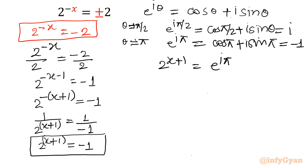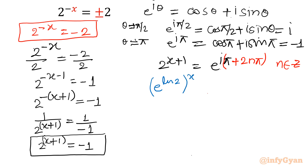To generalize, I replace pi by pi plus 2n pi, where n belongs to the integers. So the left hand side 2 raised to the power x plus 1 equals e raised to the power i times pi plus 2n pi. Applying change of base, 2 can be written as e raised to the power ln 2, with whole power x plus 1. The right hand side becomes e raised to the power i pi times 1 plus 2n, taking pi as common.